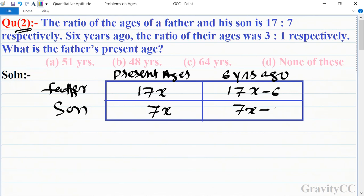Their ratio becomes 3:1. So now we cross multiply. According to the question, three times (7x-6) equals 21x-18, which equals 17x-6.